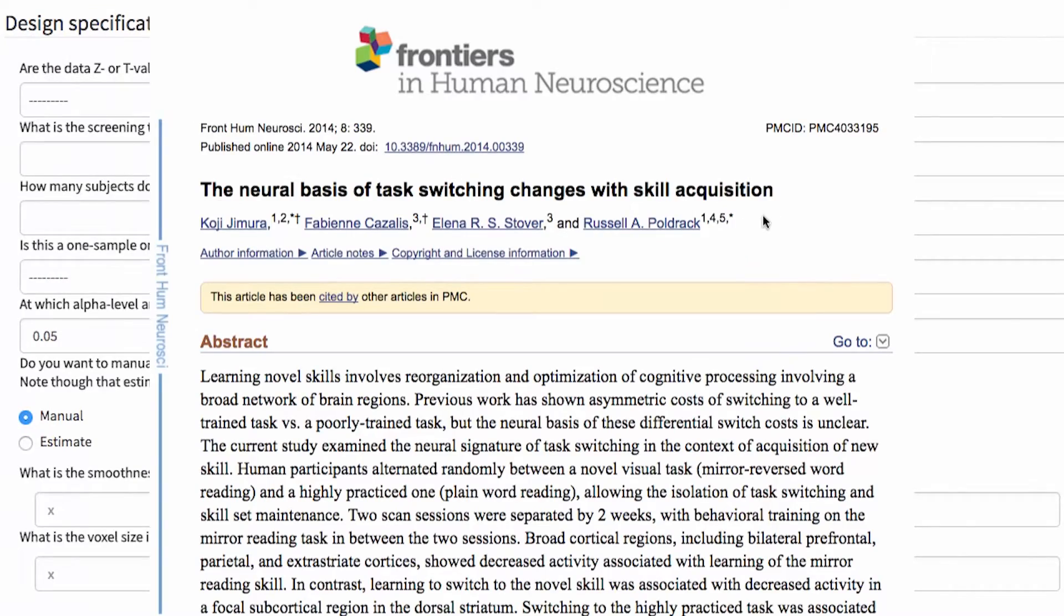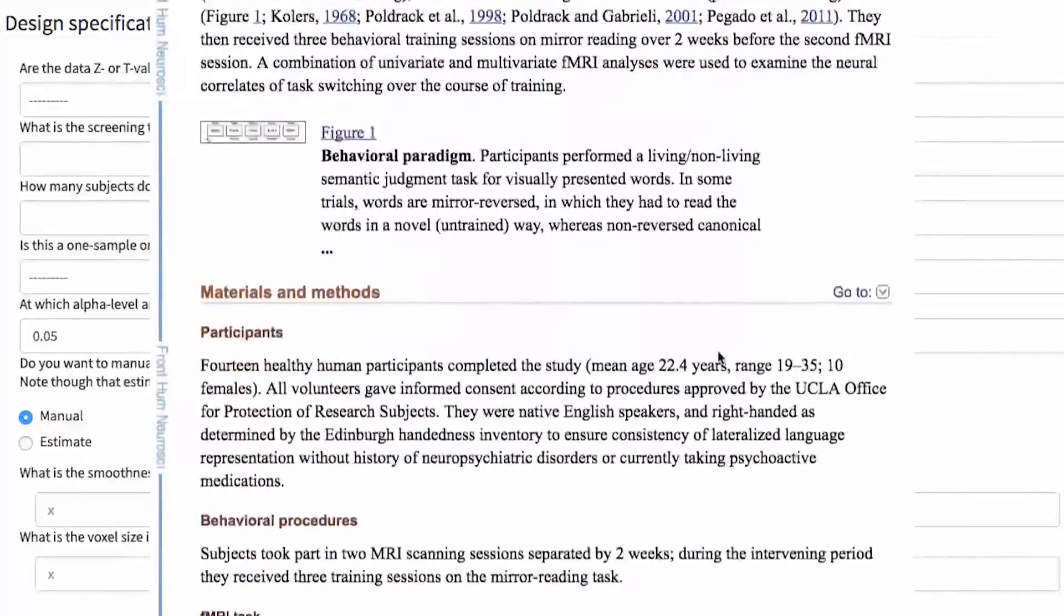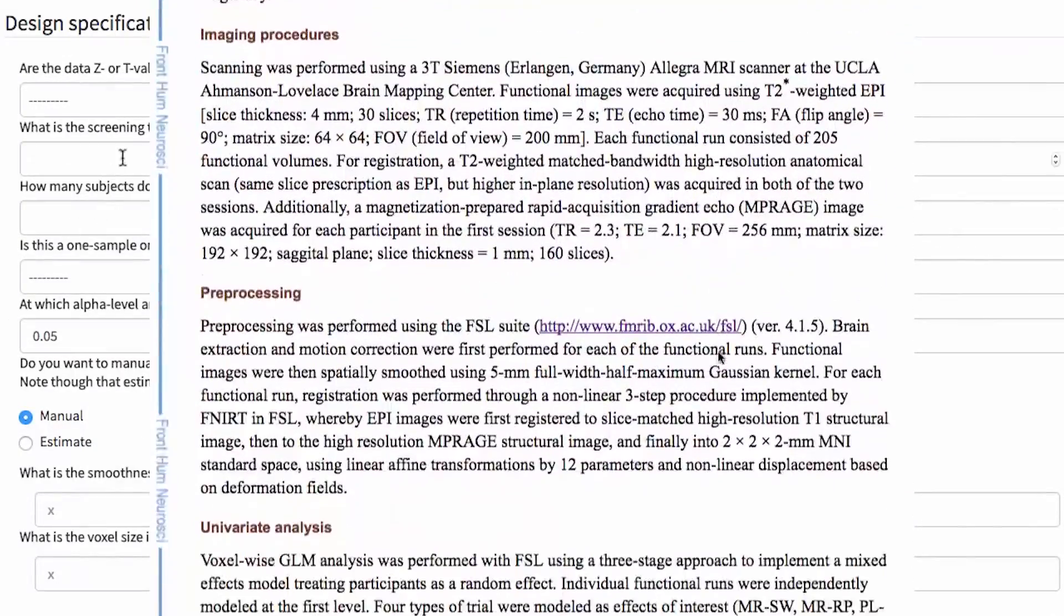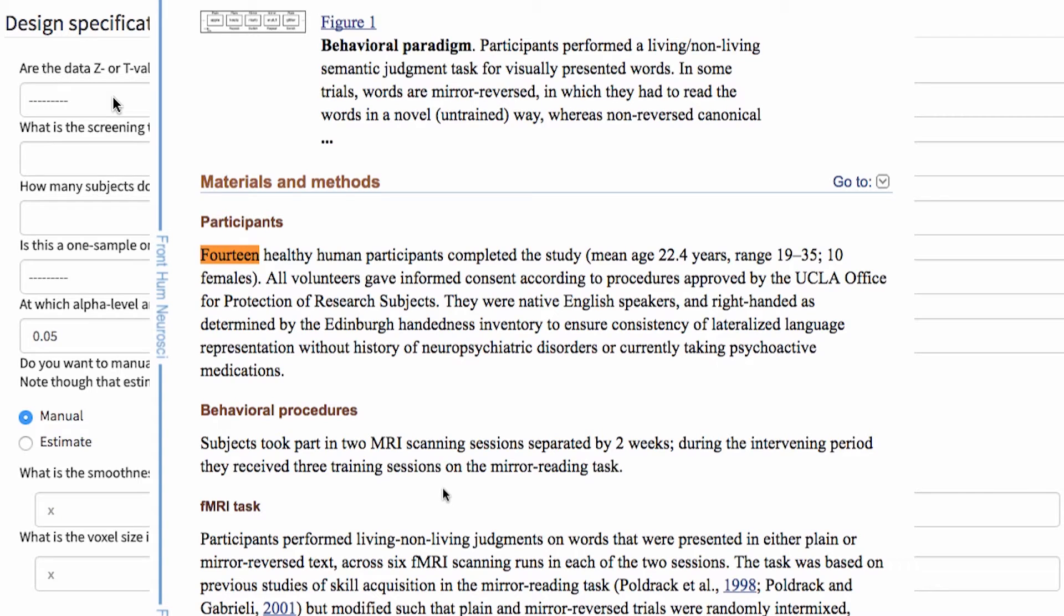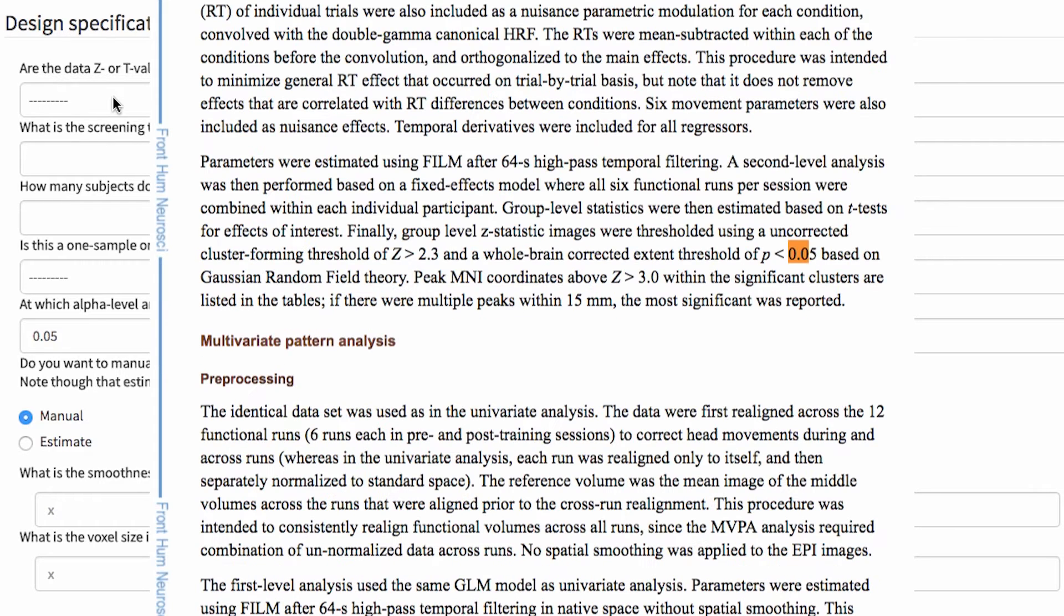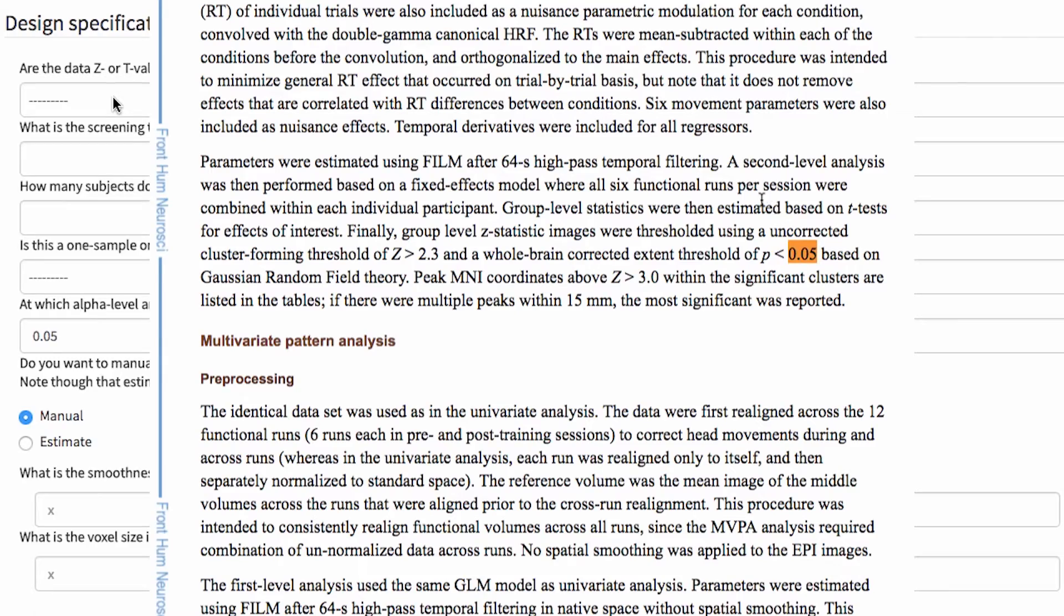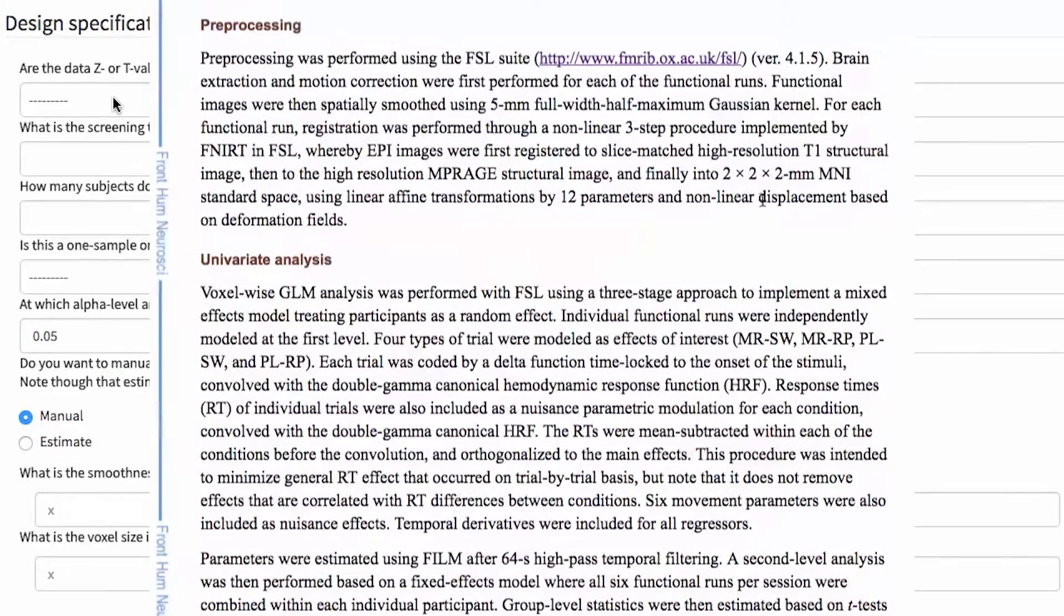You're going to need to read the paper from these pilot studies, if you pull them from NeuroVault, to know different parameters you'll need for the power analysis. For example, are the data Z or T values? What's the screening threshold? How many subjects does a group map represent? Is this a one-sample or two-sample test? What's the alpha level for the statistical test? Usually this one is just 0.05.